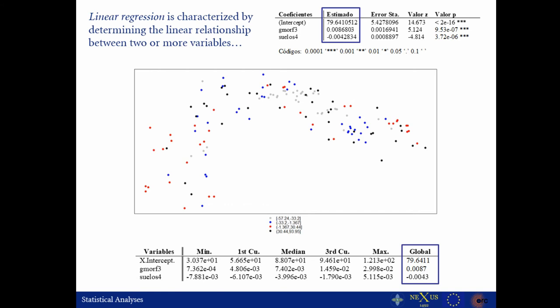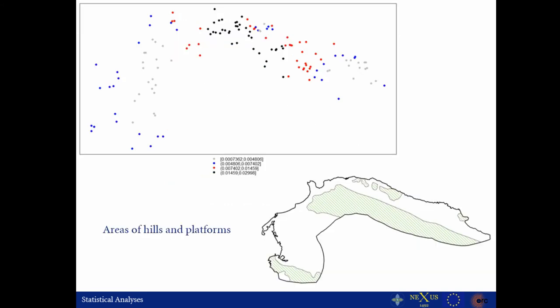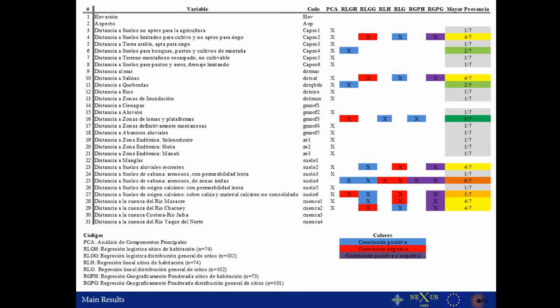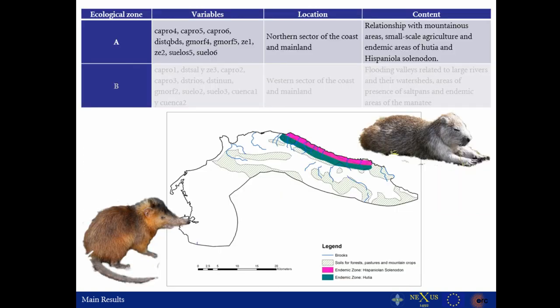When we calculated this for the overall database, we saw some differences in space. For example, the variable areas of hills and platforms shows a group of archaeological sites with the strongest relationship to this particular variable, with some sites on the edges also showing a relationship. We took this and compared it with other statistical and spatial variables, which allowed us to eventually create what we are calling two ecological zones in a particular area of this research region.